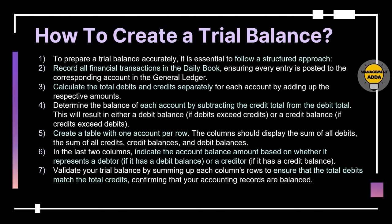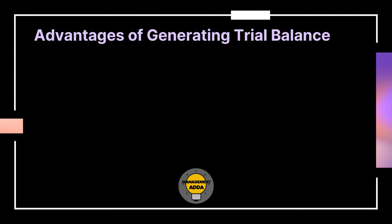Seventh, validate your trial balance by summing up each column to ensure that the total debits match the total credits, confirming that your accounting records are balanced. When it is balanced, it means you don't have any errors — you haven't added anything twice, and you have double-checked all your transactions.